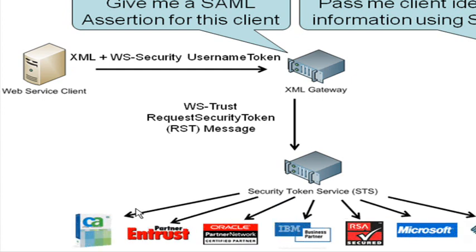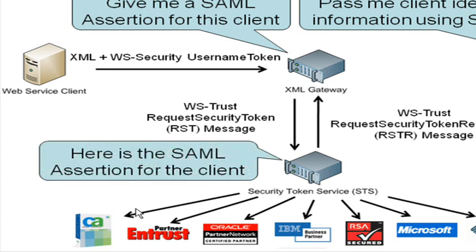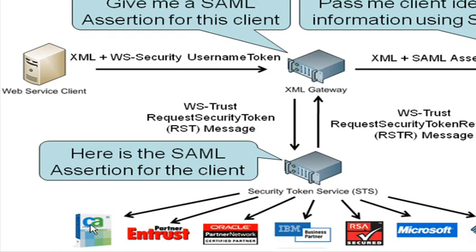The security token service issues it based on connections into identity management products — CA, Entrust, Oracle, Sun, and so forth. It returns back an RSTR, request security token response message, to the XML Gateway, which includes a SAML token which the XML Gateway then sends in the message to the web service.